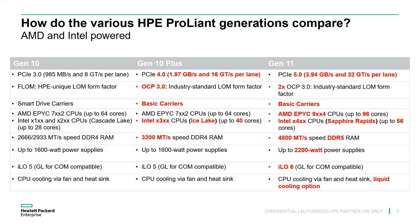The benefits of moving to Gen 11 — increased memory speed, increased PCIe bus bandwidth, and increased core counts — don't necessarily contribute significantly to the performance of something like a file server, gateway, or domain controller. So there are still plenty of applications where Gen 10 or Gen 10 Plus will do. The features highlighted in red on this slide are what changed from generation to generation.